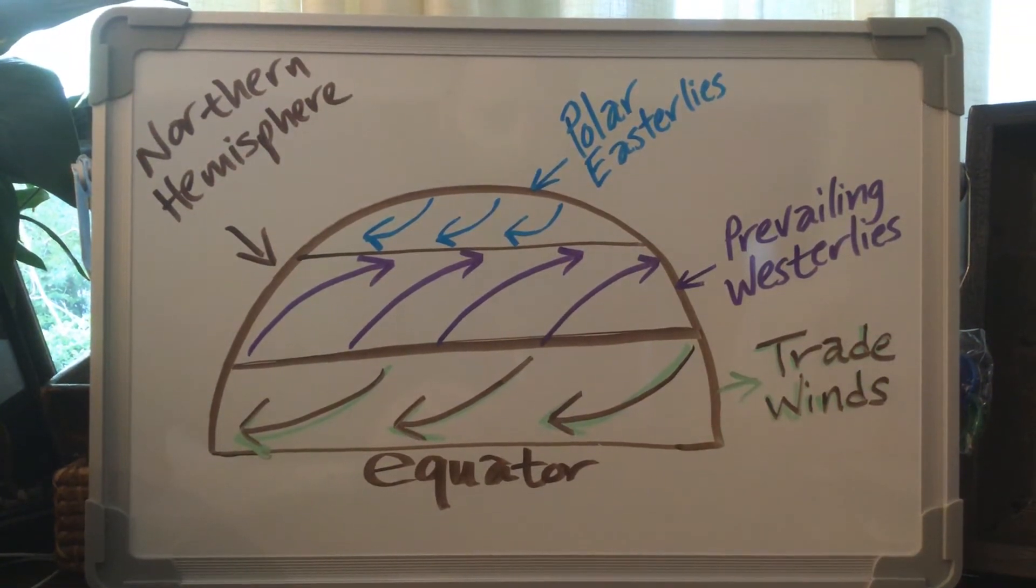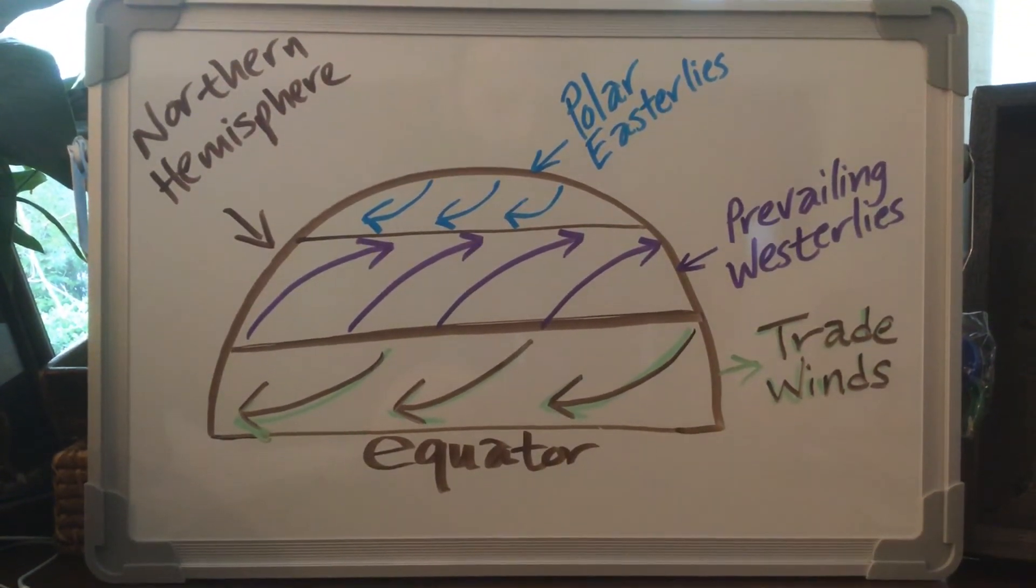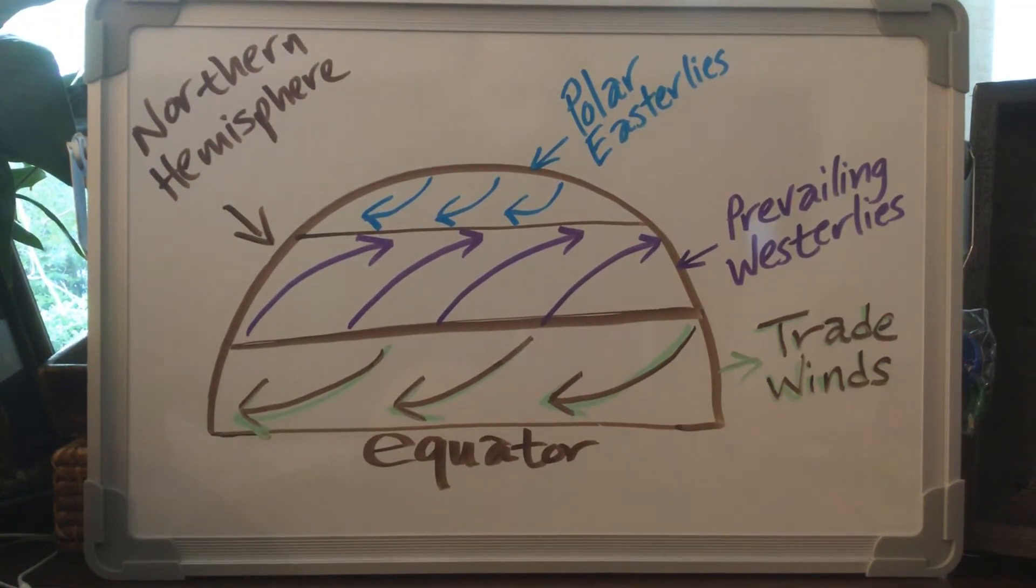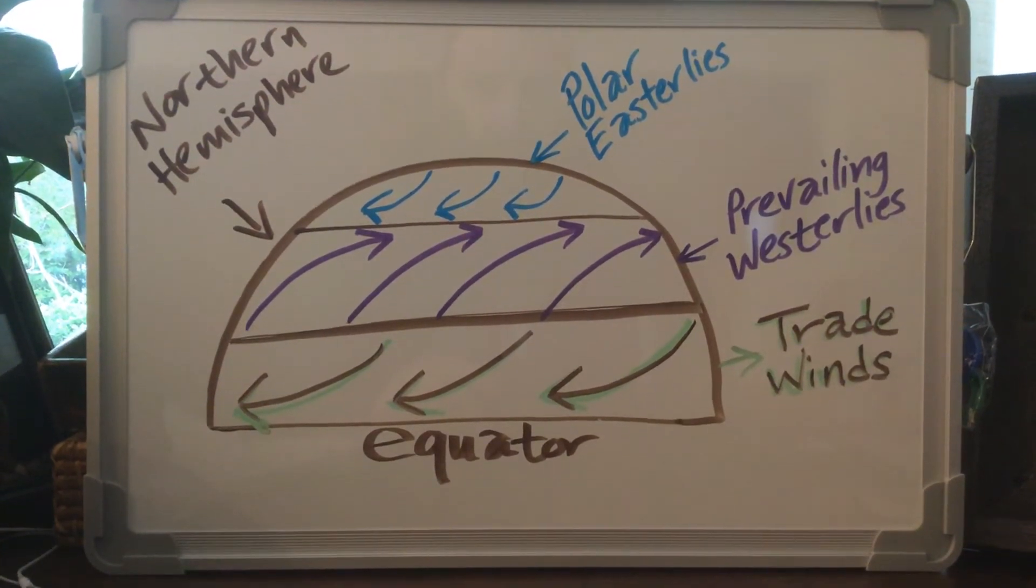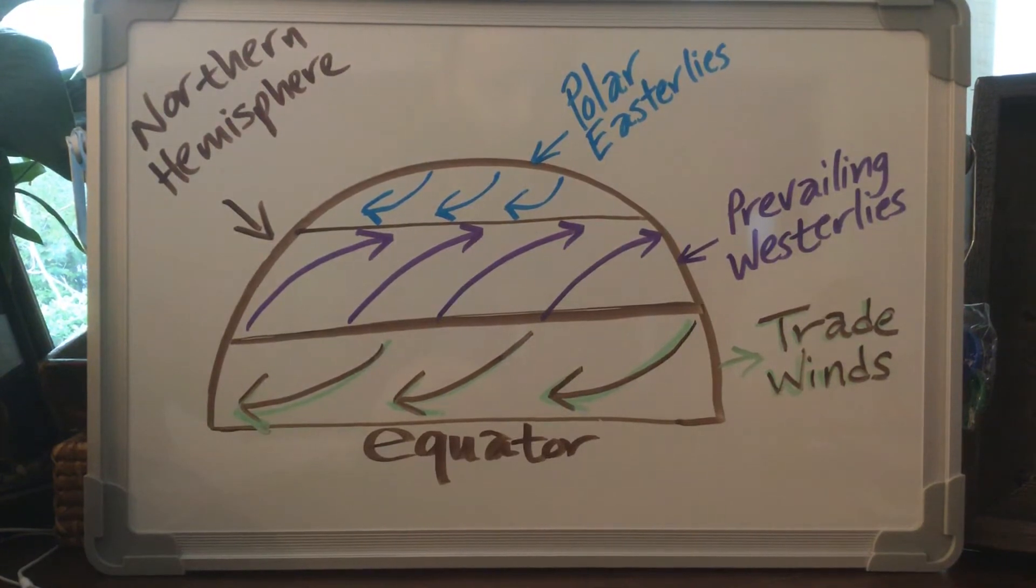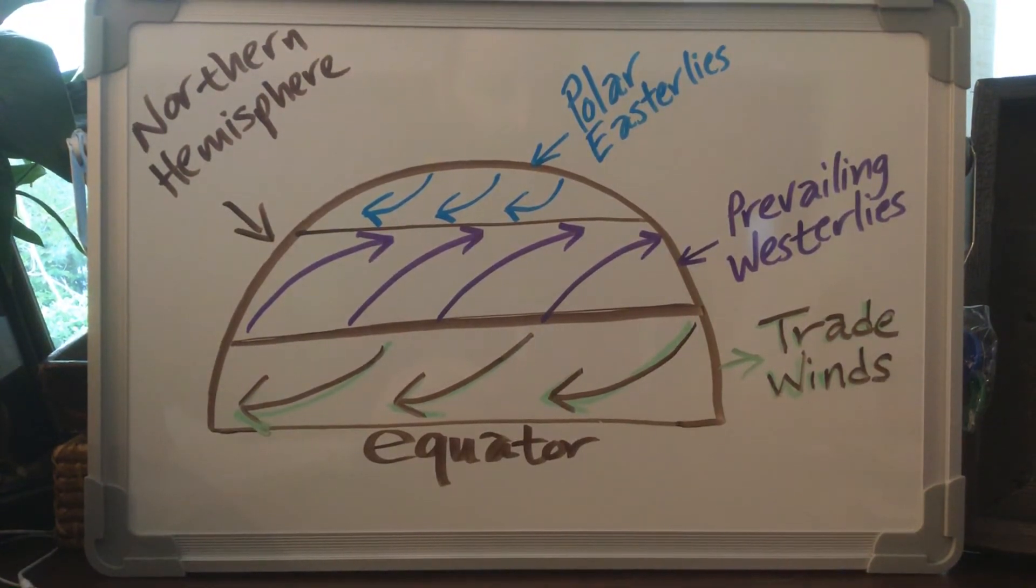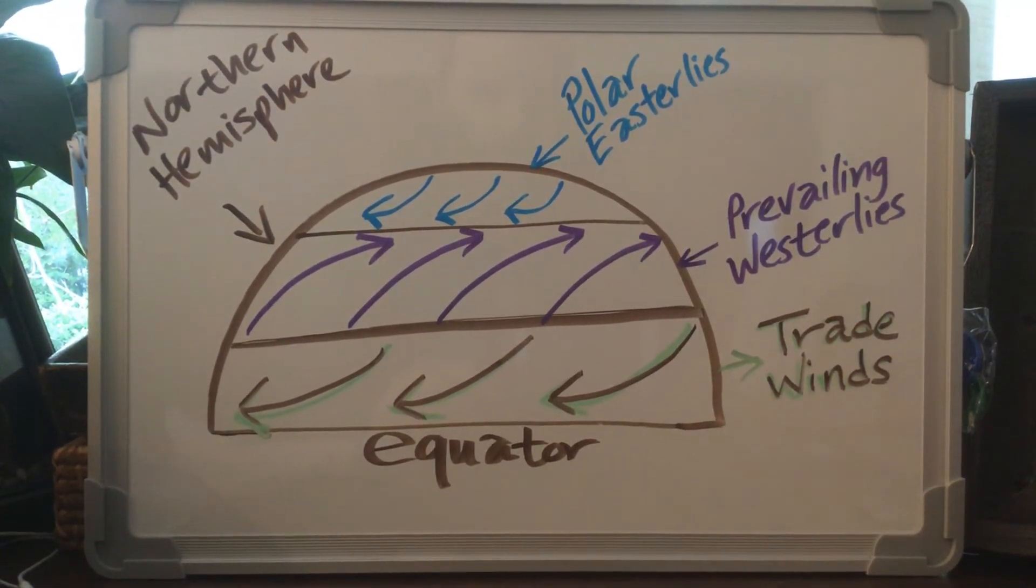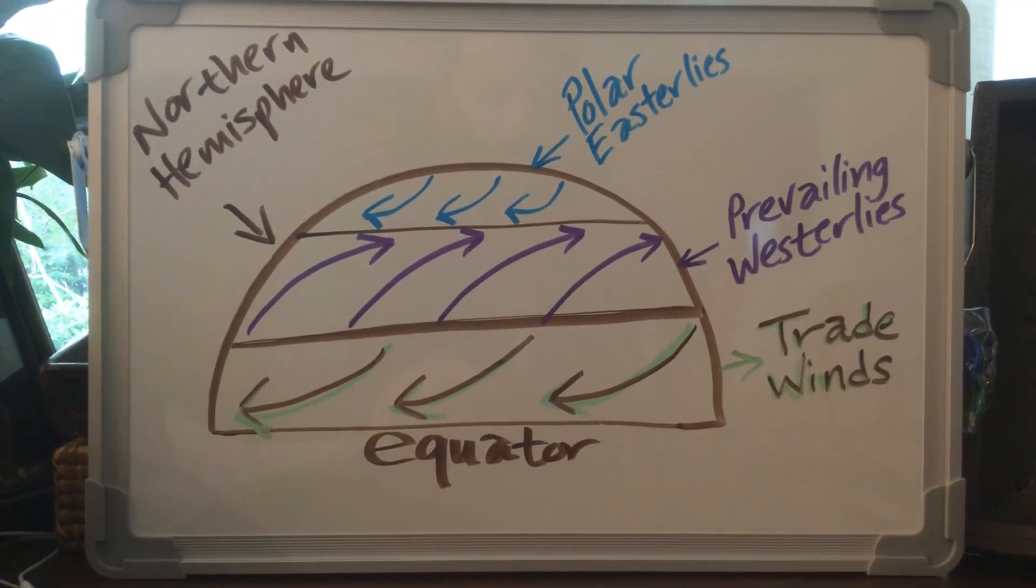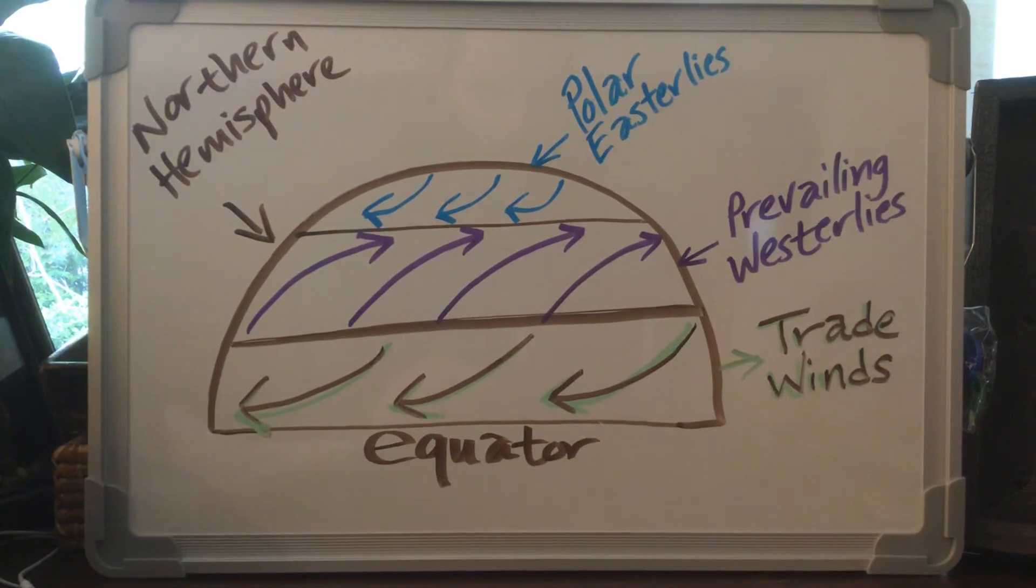And then up at the very top of the world, up near the tundra and taiga, are going to be the polar easterlies. Those are really easy to remember because if you think about a polar bear and the polar easterlies, they're both cold. Okay, so the polar easterlies blow the same direction as the trade winds. They blow from the east towards the west, so they're going to be an easterly wind as well.